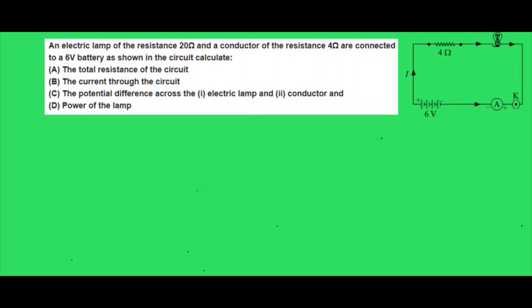Here we can see two resistors — 4 ohm and 20 ohm — connected in series. In order to find the total resistance of the circuit, we have to add these two individual resistors, because the total resistance in series is given by the sum of the individual resistances. So, total resistance R_s is given by R1 plus R2, which is 4 plus 20, that is 24 ohm.